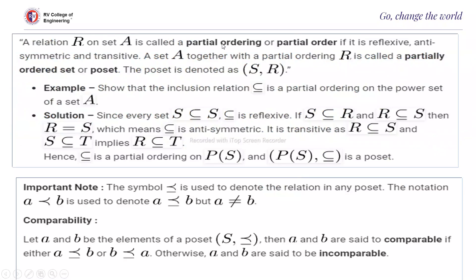A relation on set A is called a partial order or partial ordering if it is reflexive, anti-symmetric, and transitive. Set A together with the partial order R is called a partially ordered set or a poset, denoted (S, R). Example: show that the inclusion relation (subset relation) is a partial ordering on the power set of A. Since every set is a subset of itself, subset is reflexive. If S ⊆ R and R ⊆ S then R = S, so it is anti-symmetric. It is transitive since R ⊆ S and S ⊆ T implies R ⊆ T. Therefore, (power set of S, ⊆) is a poset.